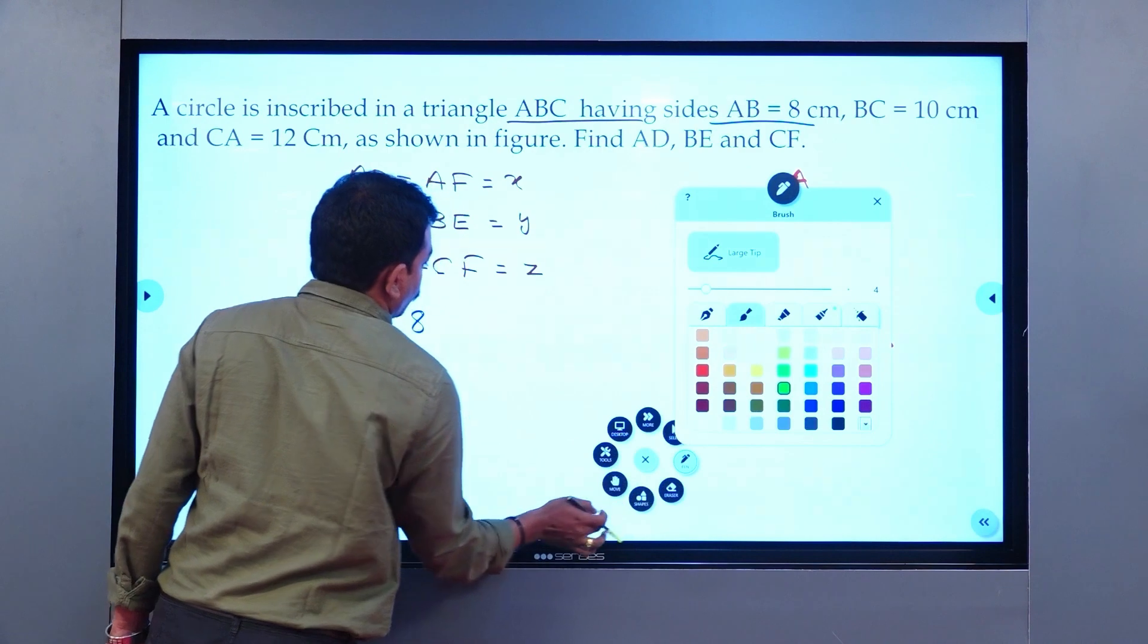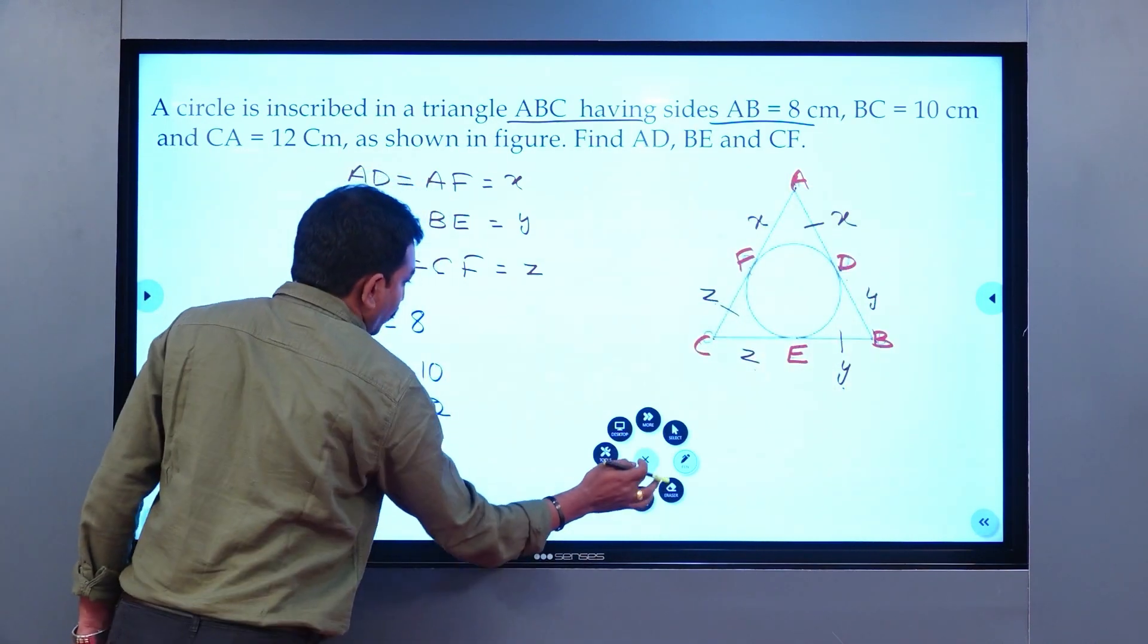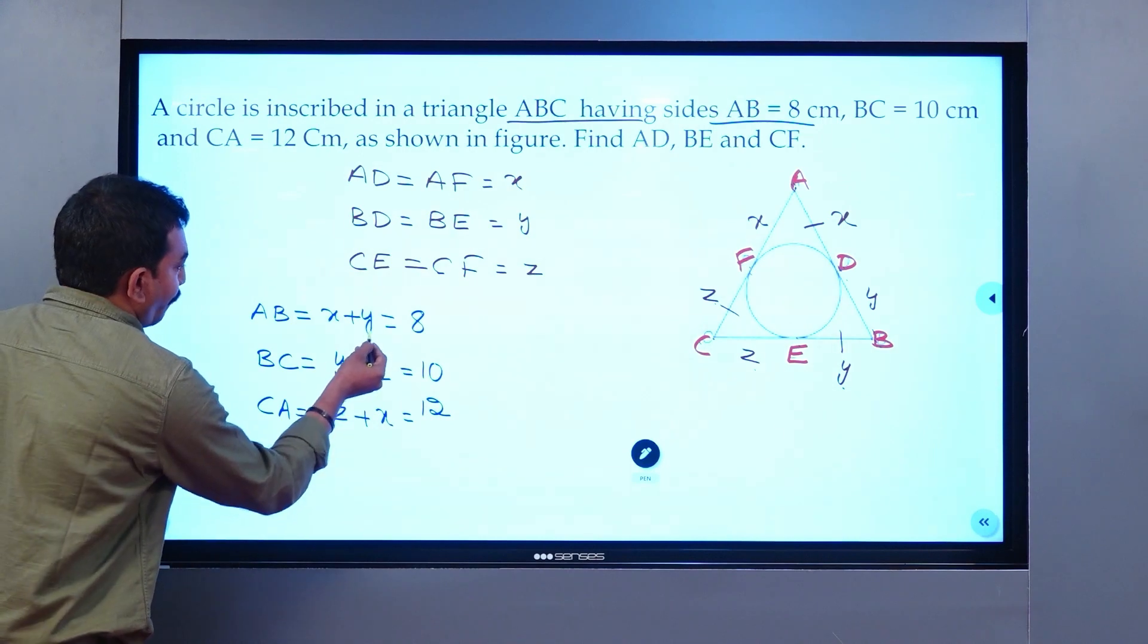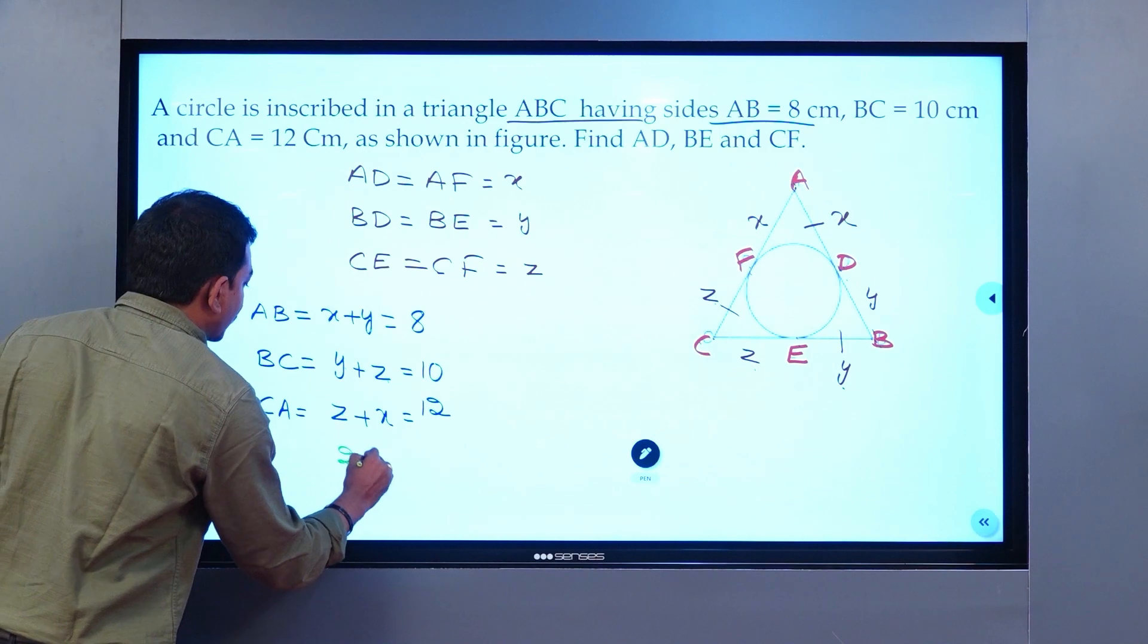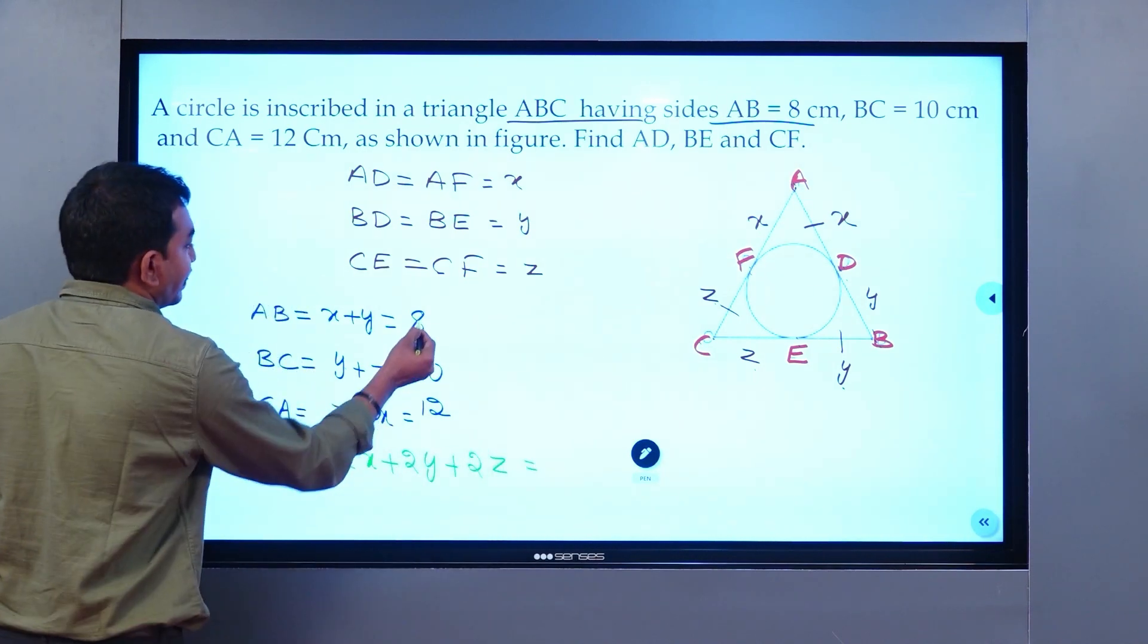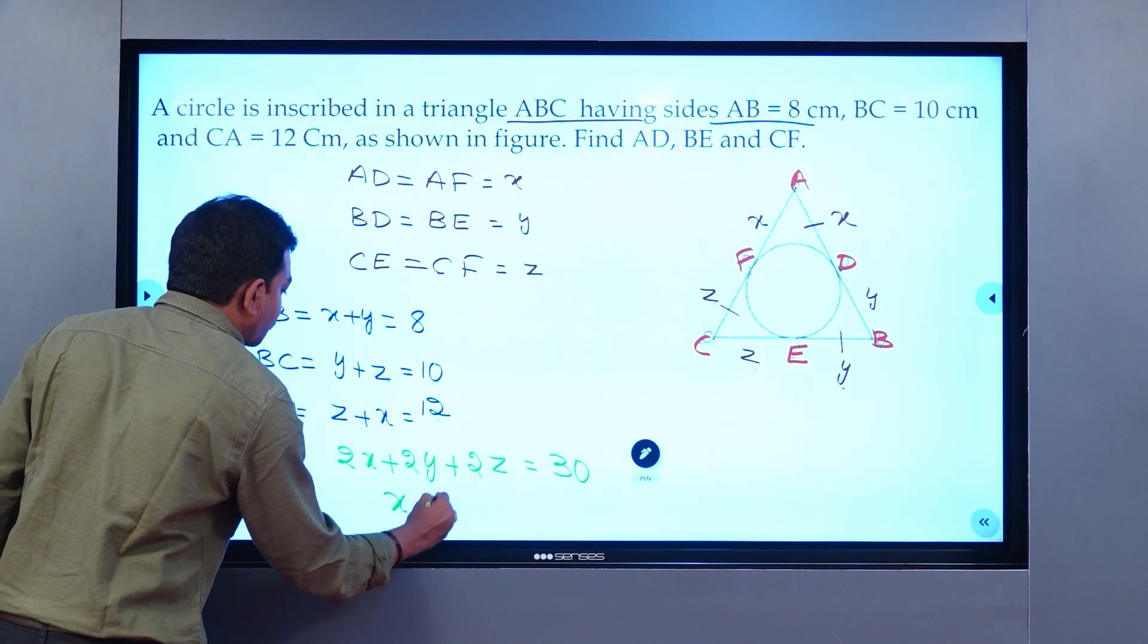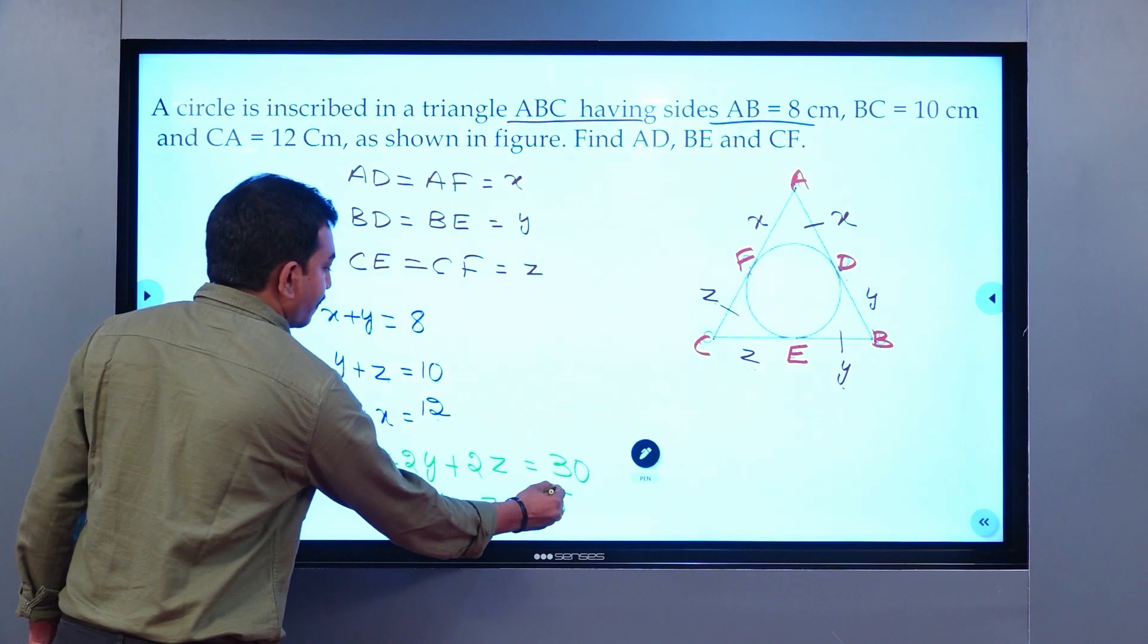How do we solve to get the values of X, Y, Z? If you observe cautiously, we can add these three expressions to get 2X plus 2Y plus 2Z equals 8 plus 10 plus 12, which is 30. Divide everything by 2. X plus Y plus Z equals 15.